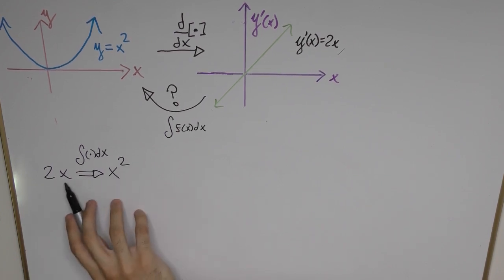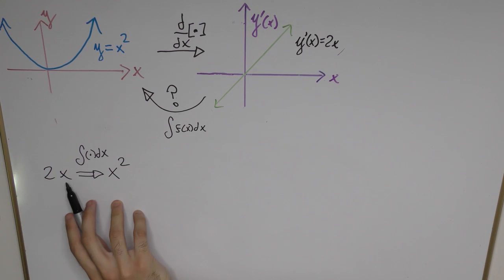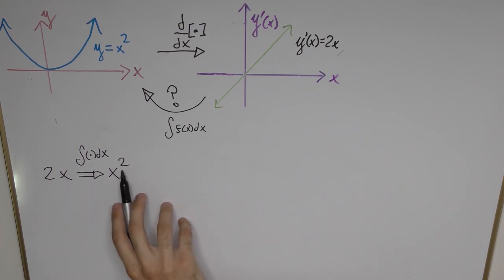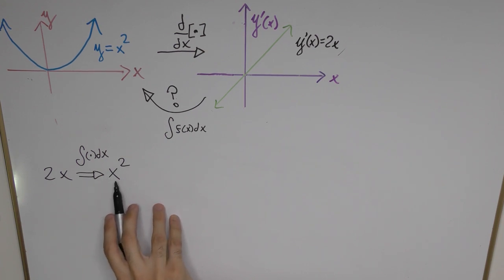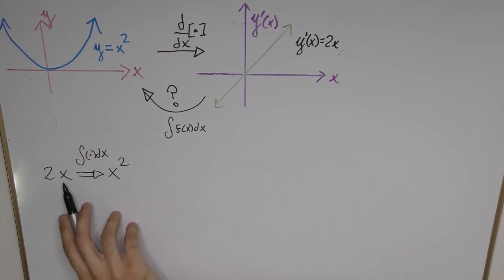So immediately what we can tell is that whereas with a derivative we would need to decrease the power by one unit and then place that power as a factor at the front, if we're going to integrate we should be doing the opposite of that operation.